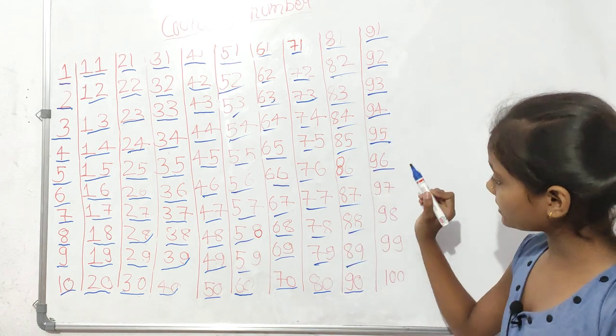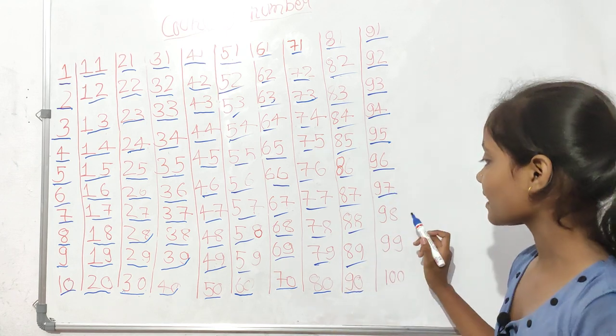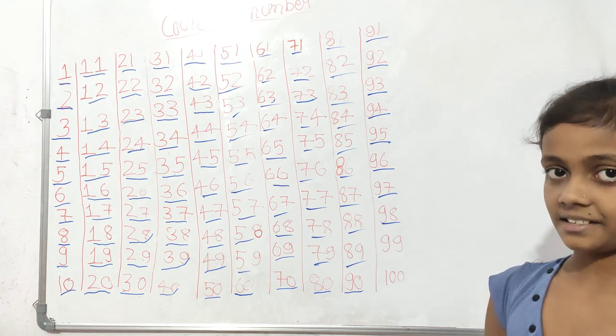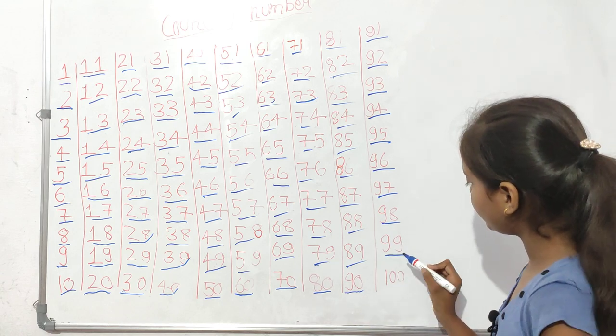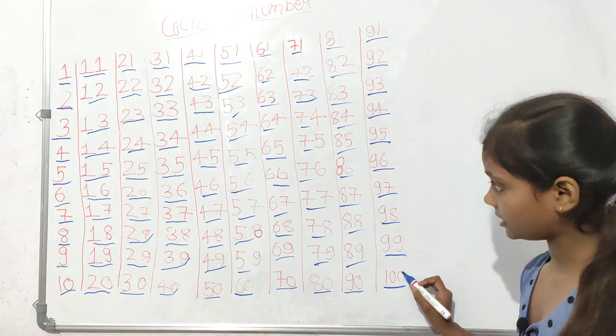Ninety-six, ninety-seven, ninety-eight, ninety-nine, one double zero, hundred, okay.